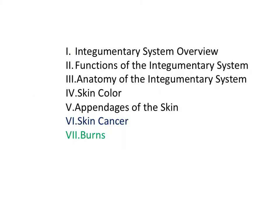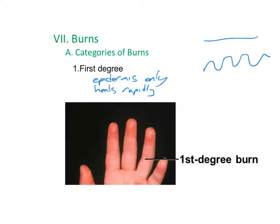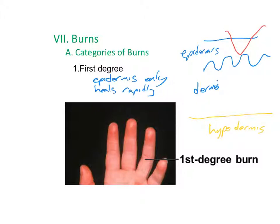The last topic is burns. A first degree burn is the least harmful and occurs only in the epidermis. Because it is superficial to the underlying dividing keratinocytes, it heals rapidly. The outer epidermis is killed but those underlying cells continue to divide and repair the skin.